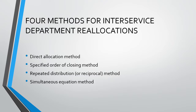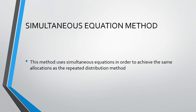This slide is just a reminder of the different methods we have for inter-service department reallocations. In this video, we will be looking at the last method, the simultaneous equation method. This method uses simultaneous equations in order to achieve the same allocations as the repeated distribution method. This method is a bit more complex, as it requires us to generate and solve simultaneous equations. However, it does result in a shorter allocation process.